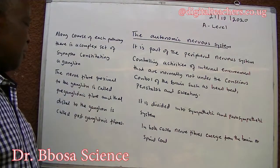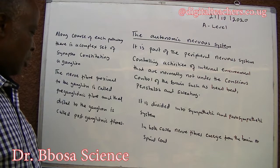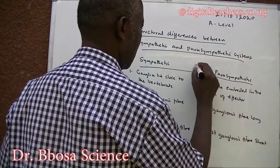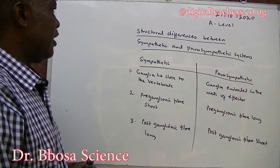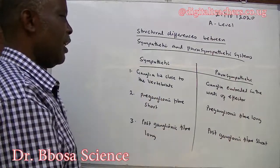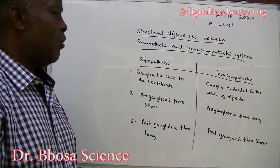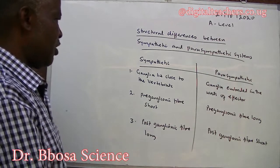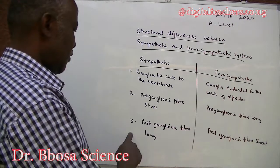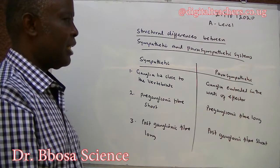The nerve fiber proximal to the ganglion is called the preganglionic fiber, and that distal to the ganglion is called the postganglionic fiber. Structural differences between the sympathetic and parasympathetic systems: In the sympathetic system, the ganglion lies close to the vertebral column. In the parasympathetic system, ganglia are embedded in the walls of the effector. The preganglionic fiber is short in the sympathetic and long in the parasympathetic. The postganglionic fiber is long in the sympathetic and short in the parasympathetic.